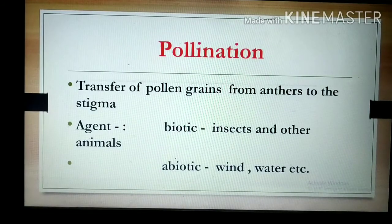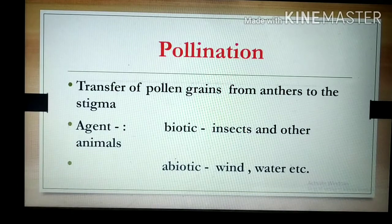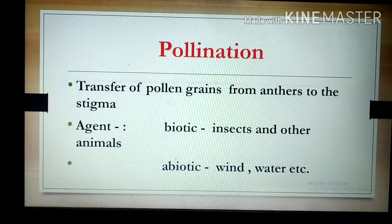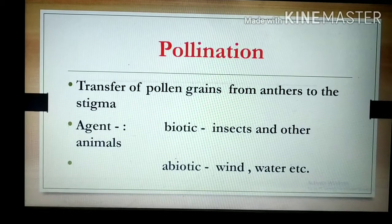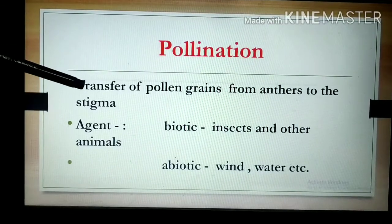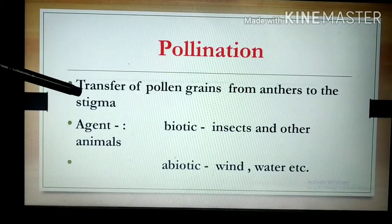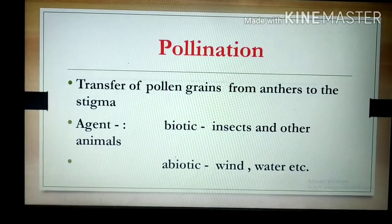Up till now we discussed about the parts of a flower — the reproductive organs present in the flower. Now we will discuss about pollination. Pollination means the transfer of pollen grains from anthers to the stigma of the gynosium. This process is called pollination.